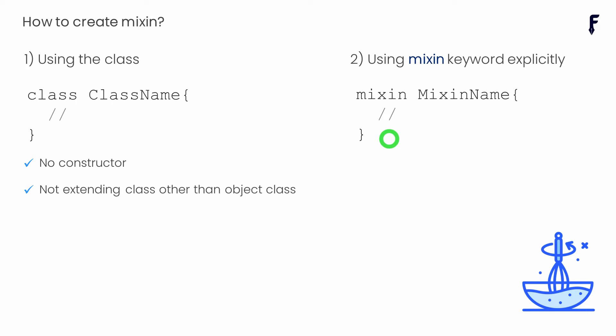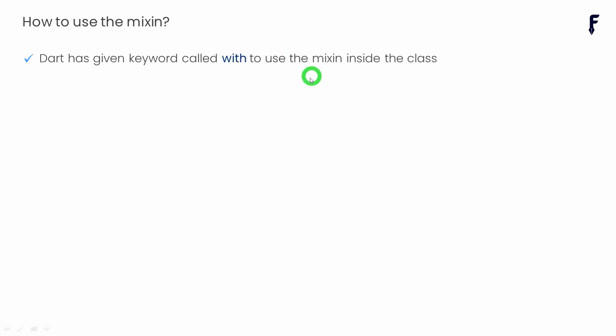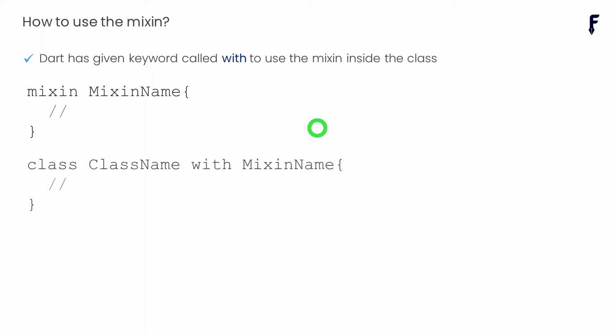Now let's talk about the other way of creating a mixin — the pure way — using the mixin keyword. This allows us to create a mixin explicitly. We simply use the keyword mixin, define the name of the mixin, then place opening and closing curly brackets with the entire definition inside. This complete syntax looks like the syntax of a class. After creating a mixin, it's time to use it practically in a class, and for this purpose Dart has given the keyword with.